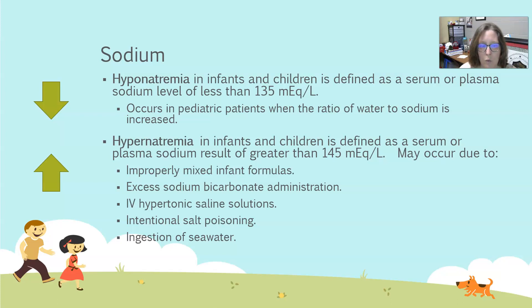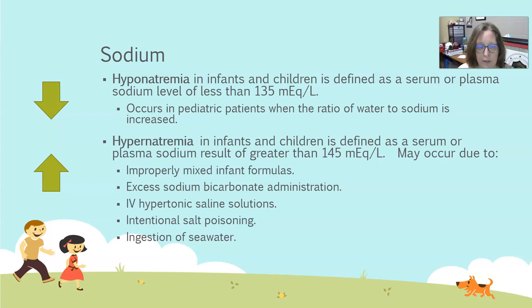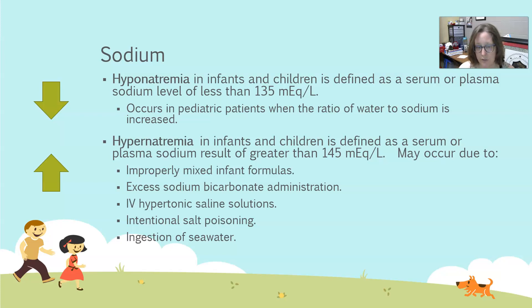Why would infants or children get hypernatremia? In infants, it can be improperly mixed infant formulas — not diluted enough or not diluted to the right ratio. Medical interventions such as excess sodium bicarbonate administration through IV, or too much IV hypertonic saline, could also cause it. It could also be intentional salt poisoning or injection of seawater.